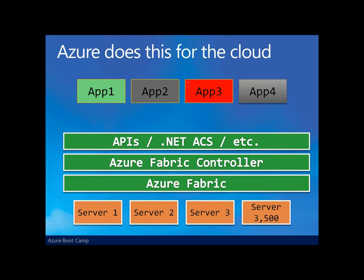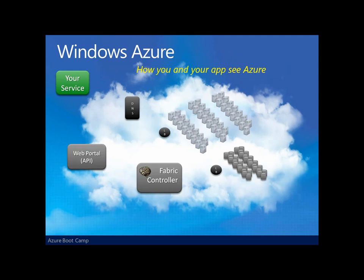It provides a set of APIs and controllers to help manage our applications inside of the cloud. Windows Azure is a collection of data centers, each running a collection of commodity hardware — the fabric. Some servers in that fabric provide for computation, others provide for data storage. The fabric controller serves as the brains of that data center and fabric, managing the hardware and the applications that run on it.